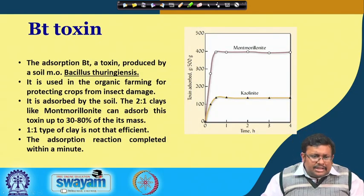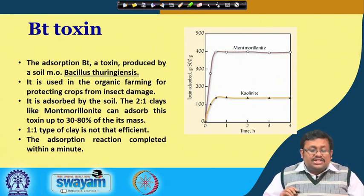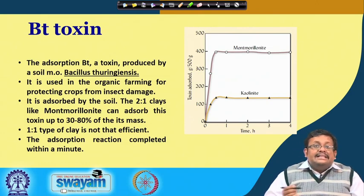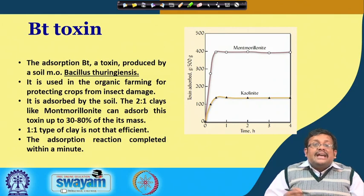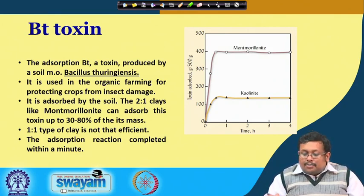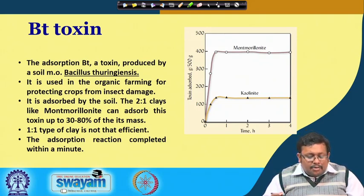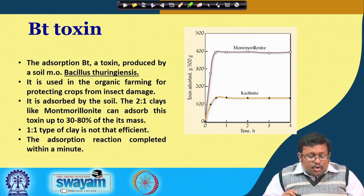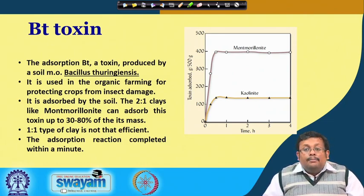One example is Bt toxin — a toxin produced by the soil microorganism Bacillus thuringiensis — used in organic farming to protect crops from insect damage. It is adsorbed by soil: 2:1 type clay montmorillonite can adsorb this toxin up to 30–80% of its mass, as shown in the graph. The 1:1 type of clay is not as efficient due to its low charge development, and the adsorption reaction is completed within a minute in case of montmorillonite.